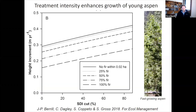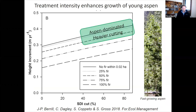Looking at the growth rates of young aspen, which are the future of these stands to replace the aging overstory, the height increment per year is enhanced by a more intense restoration treatment. If there's more conifer removal we're going to see a greater response in terms of young trees growing. There's also a benefit to having fewer fir trees in the vicinity — we're finding that fir is impacting the growth of young aspen. The target would be to have an aspen-dominated stand, which could be created by heavier cutting.